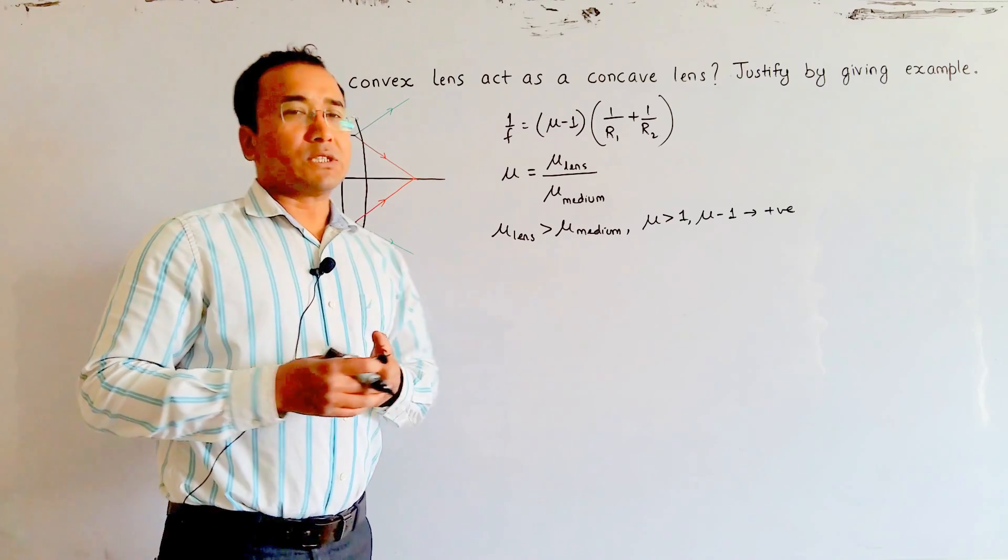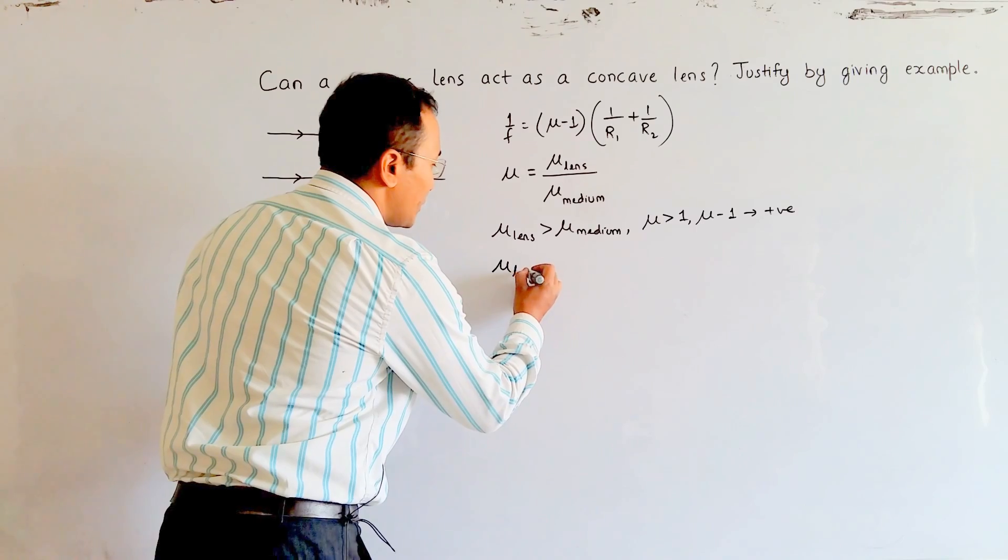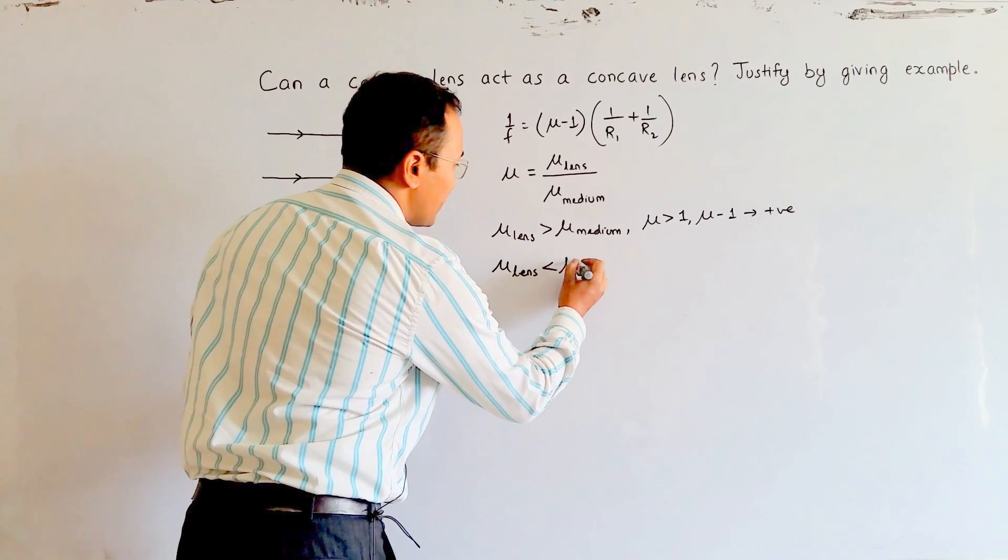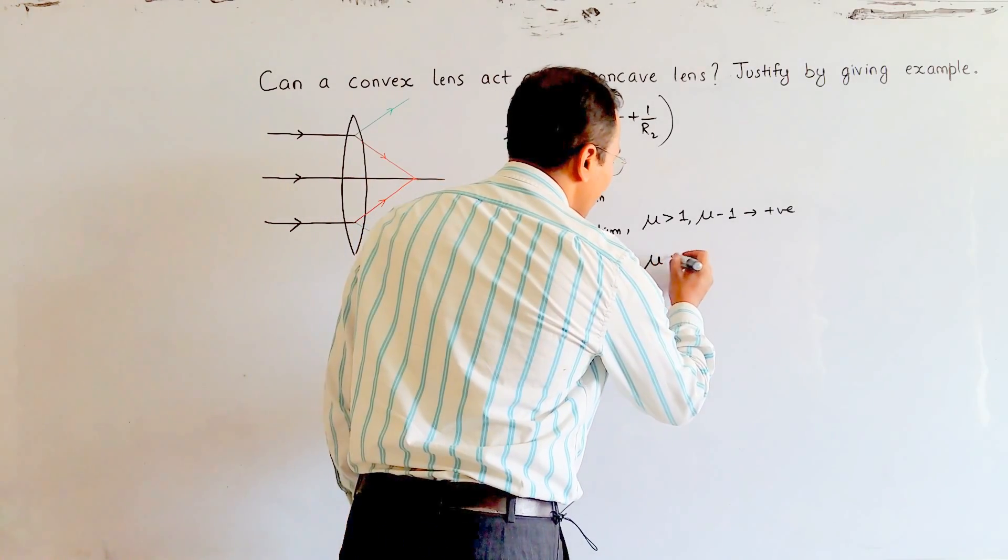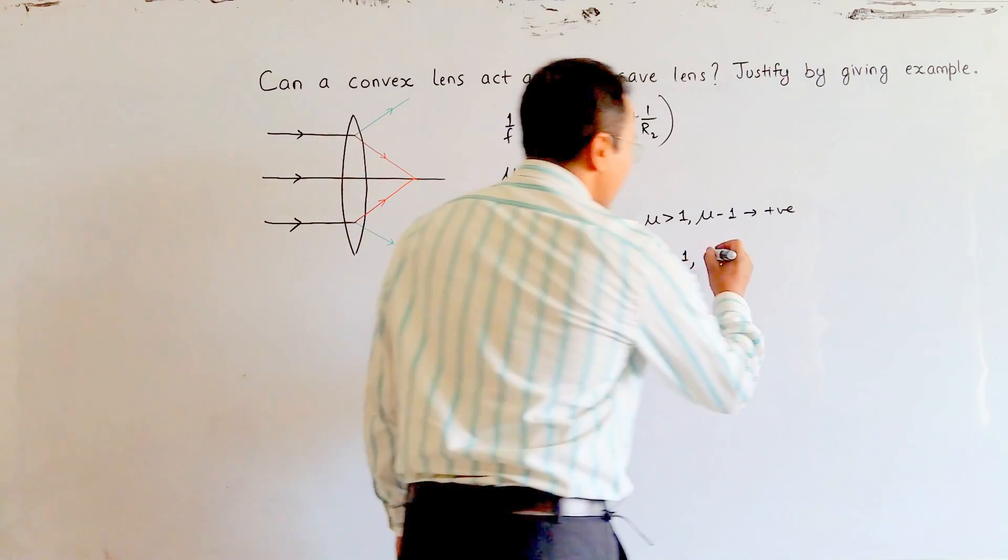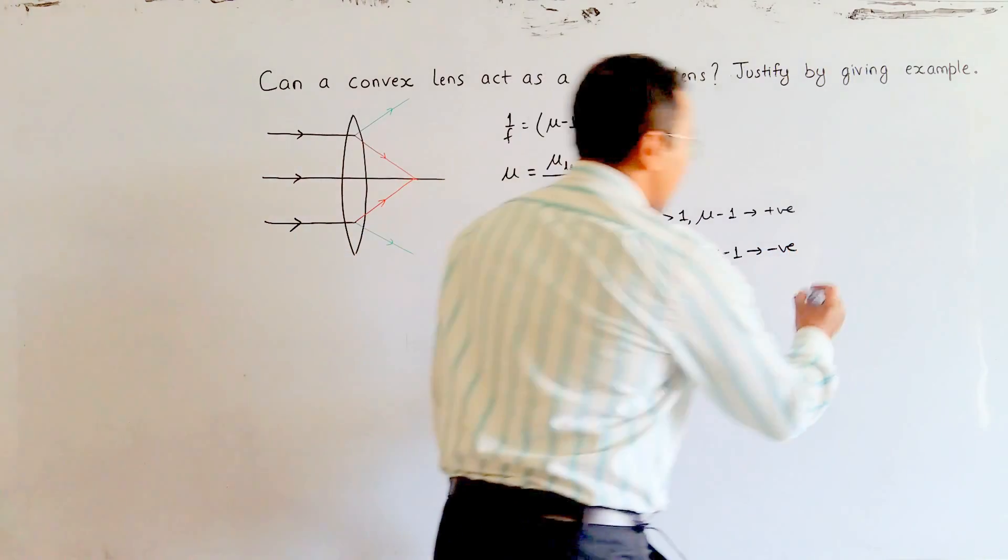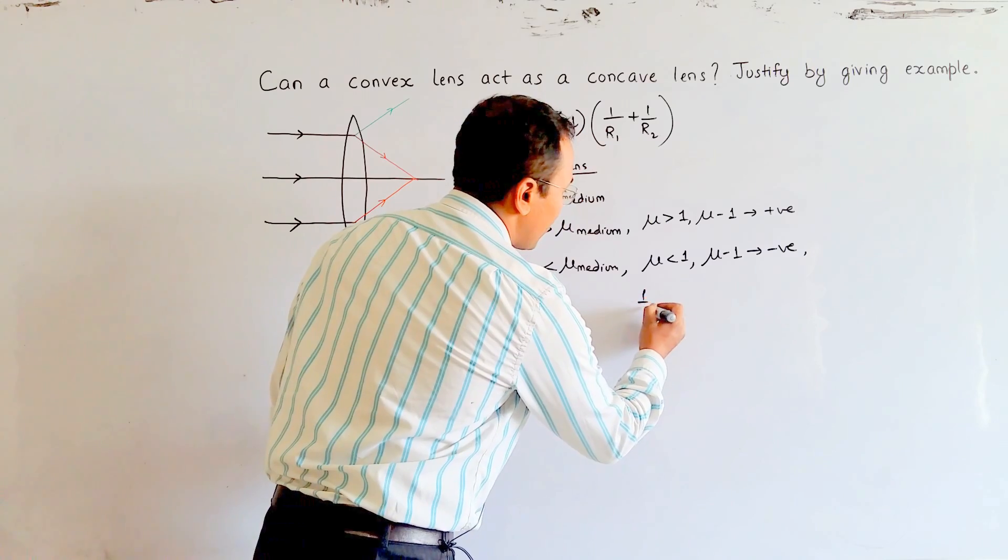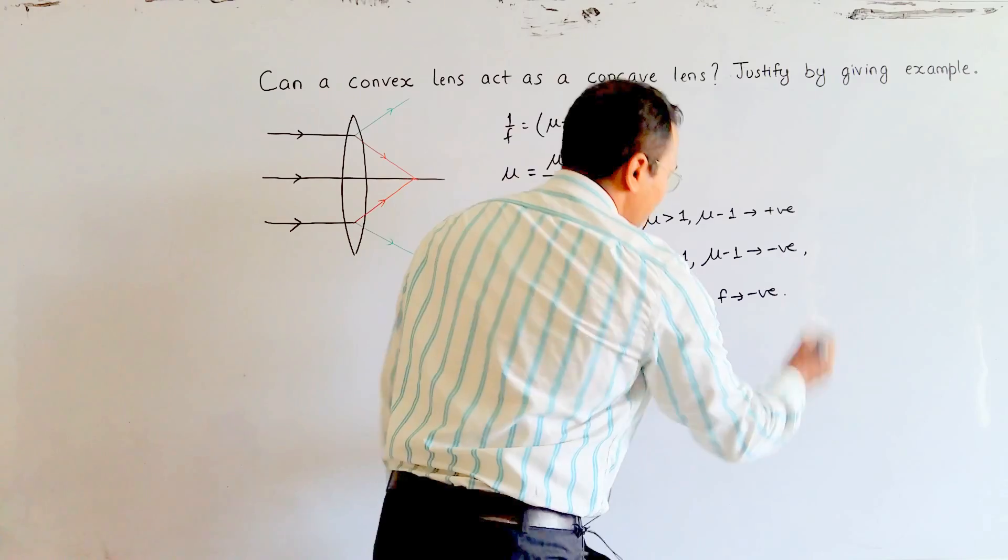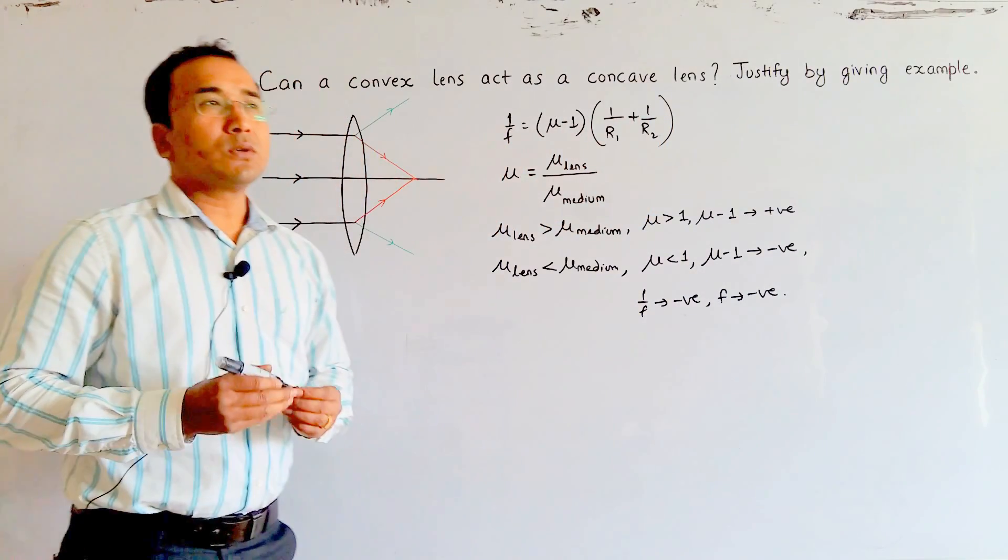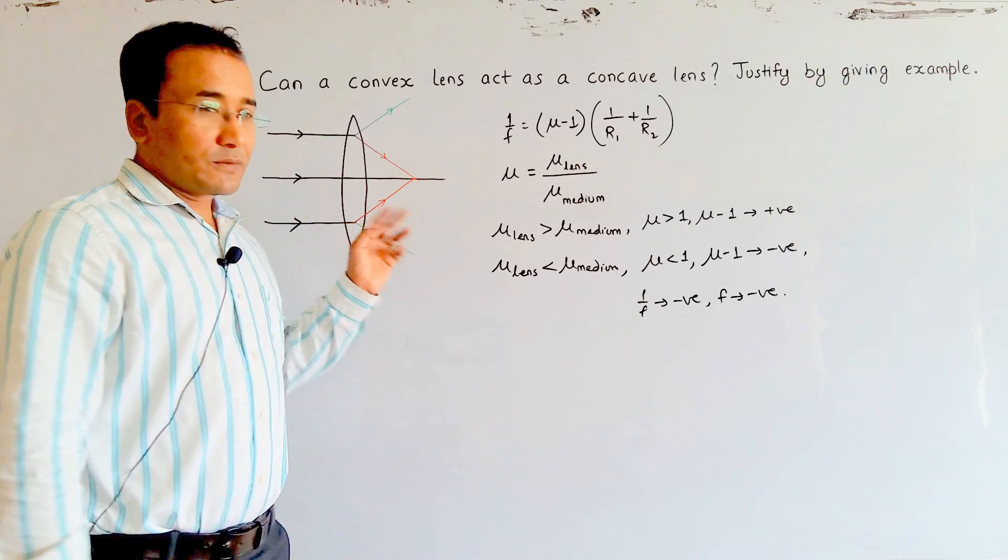But if by some way we can make μ_lens less than μ_medium, at that time we will have μ less than 1, which means (μ - 1) will be negative. This makes 1/f also negative and f negative. f negative means that now the lens will be a concave one - the light rays will be diverging instead of converging.